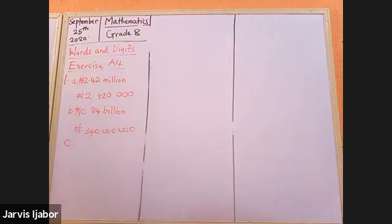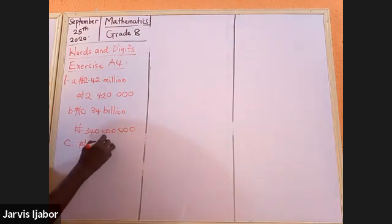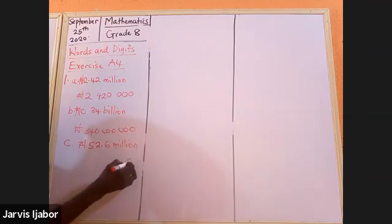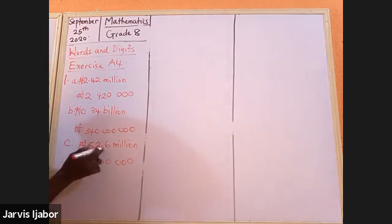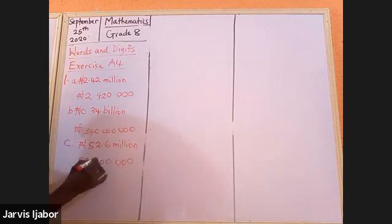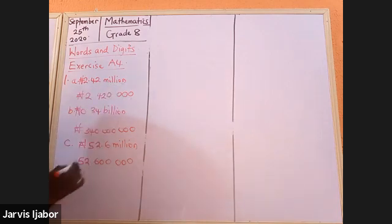Let's go to C. A student found 52.6 million Naira. I'll start from the left — 52.6 million, so I'll put the 52 first. That means this 0.6 is actually 600,000. And 0.34 means 340 million.